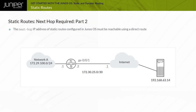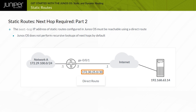By default, the Next Hop IP address of static routes configured in Junos OS must be reachable using a direct route. Unlike routing software from other vendors, Junos OS does not perform recursive lookups of Next Hops by default.